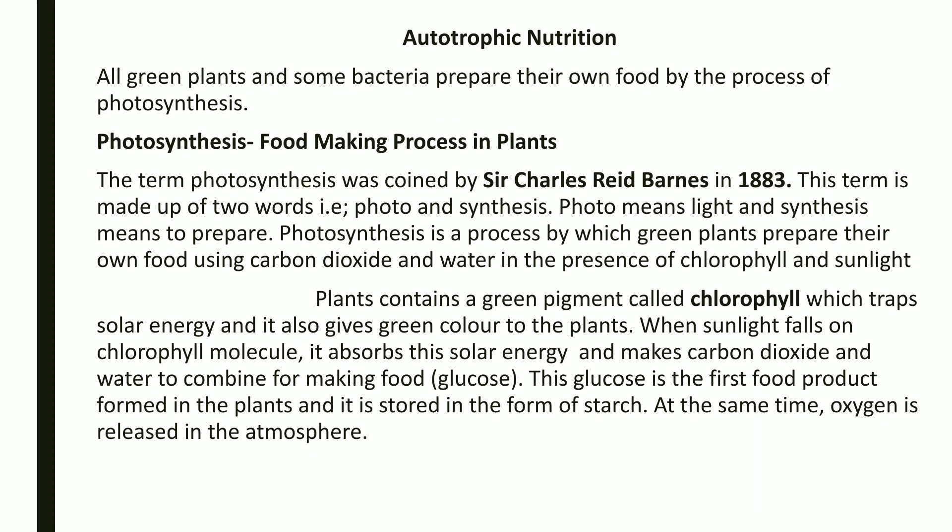Photosynthesis is the process by which green plants make their food using carbon dioxide and water, with the help of sunlight and chlorophyll. Green parts of plants contain chlorophyll, which gives the plant its green color and has the capability to trap solar energy. This solar energy is then utilized in making food for the plant.